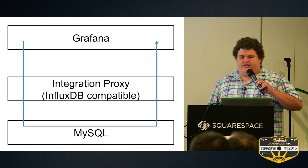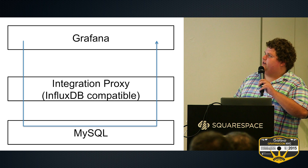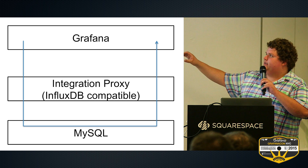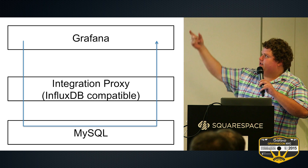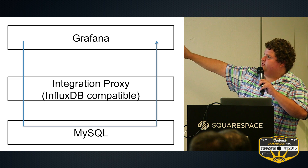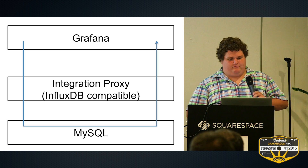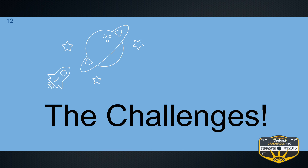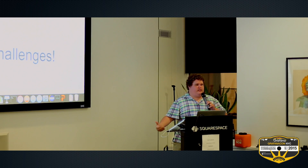When it's in production, this is the path a query takes from Grafana through the integration proxy to MySQL and back. It goes from Grafana, gets converted from InfluxDB protocol to MySQL protocol, goes through MySQL, and then makes a round trip back to Grafana. With this proxy daemon approach, that allows us to use this with Grafana without any change to Grafana. But there are some challenges because InfluxDB and MySQL are fundamentally different databases.